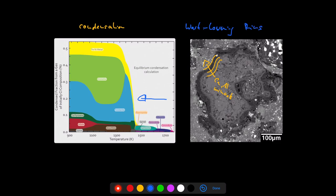This is why these rims are called Wark-Lovering rims. These are taken as clear evidence that CAIs formed by condensation within a solar gas. The second evidence is the irregular outline.